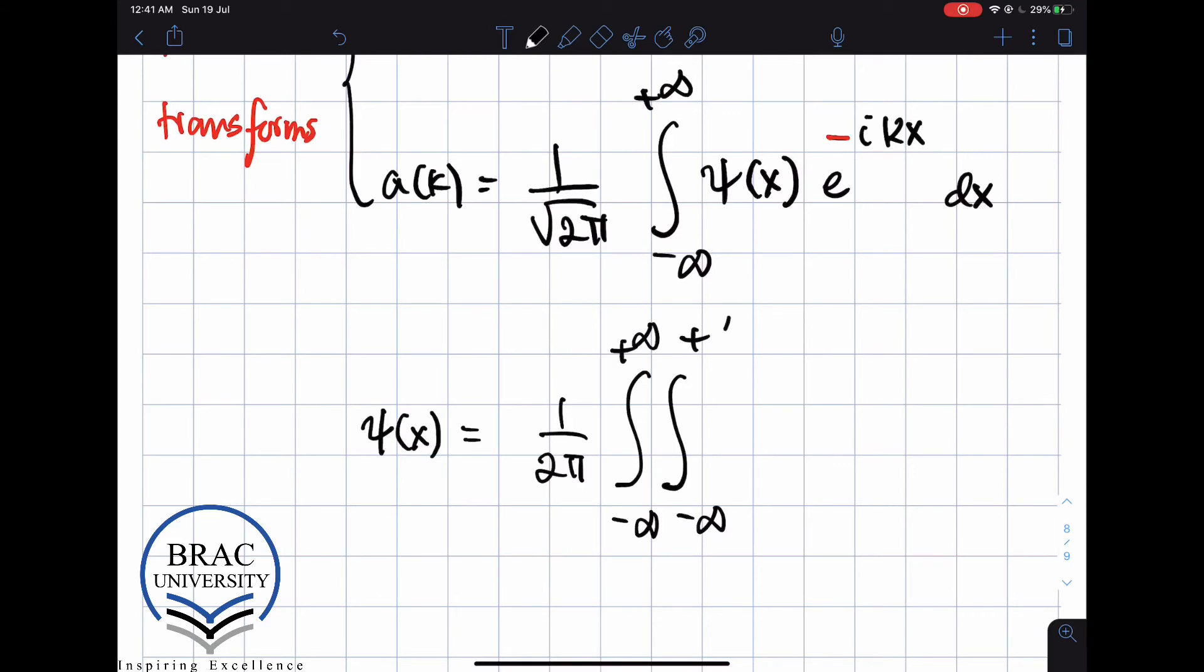And it's given by minus infinity to plus infinity, a double integral, ψ(x'). x' is an auxiliary variable that we're going to integrate over. And so is k.